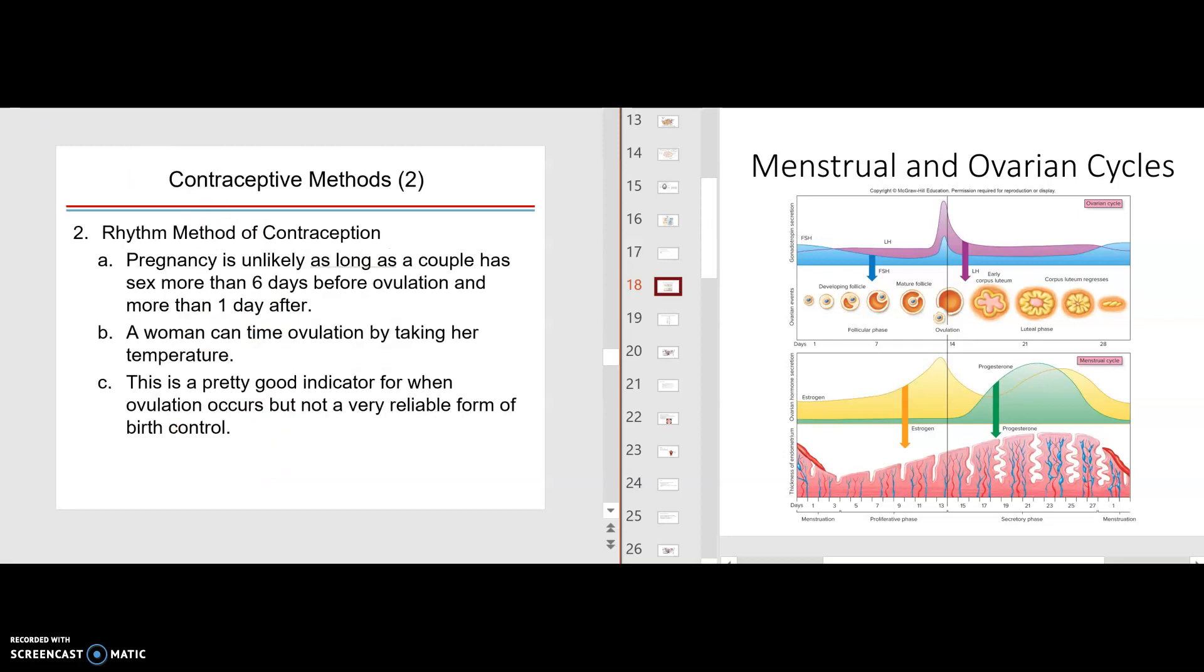The rhythm method, basically, is a method where the male and the female decide approximately when they think the lady will ovulate and try to not have sex within a pretty much a plus or minus five-day period around the ovulation time. And so this can work. Sometimes the person can misjudge their cycle, though.